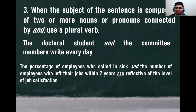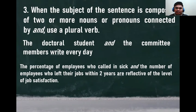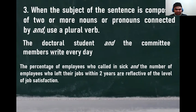Another example: 'The percentage of employees who fall in sick and the number of employees who left their jobs within two years are reflective of the level of job satisfaction.' The subjects here — 'the percentage' and 'the number' — are connected by the word 'and.' Therefore it requires the plural form of the verb, which is 'are.' Remember: connected by the coordinating conjunction 'and' requires a plural verb.